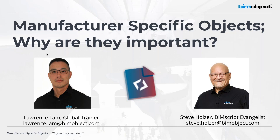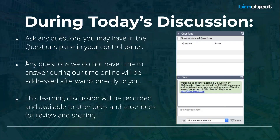Today's talk is about manufacturer-specific objects. Why are they important? Why do we need manufacturer-specific content? Why can't we just have generics or placeholders? During our discussion, ask any questions you have — there's a question box on the right-hand side. During my part of the presentation, Lawrence will be monitoring that and making sure we're able to timely answer those.